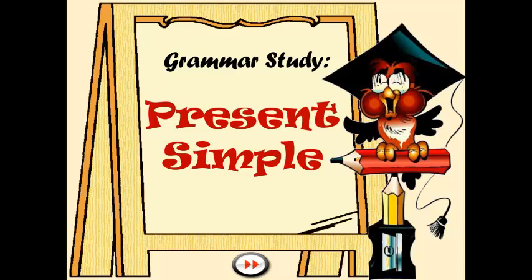Bien, vamos a empezar la clase de hoy hablando sobre un aspecto gramatical muy importante en inglés, el cual es el presente simple. La clase se va a dividir en tres partes: en la primera vamos a ver los usos del presente simple, después vamos a ver las estructuras del presente simple — cómo formamos oraciones usando el presente simple — y finalmente vamos a ver las reglas para agregar 's' a los verbos cuando se los utiliza con la tercera persona del singular, o sea con he, she, and it — él, ella, o it, que se usa para las cosas, animales u objetos. Let's begin!